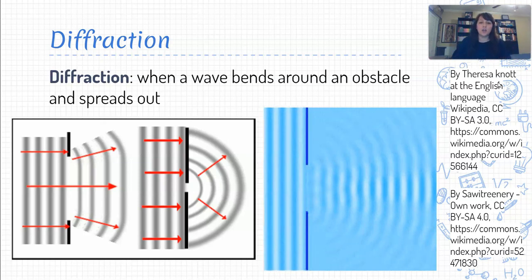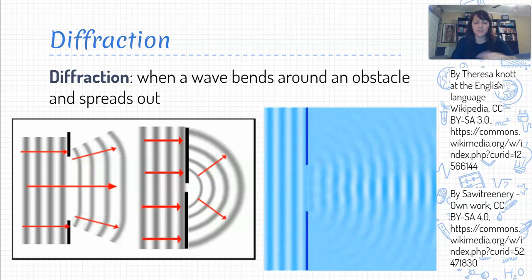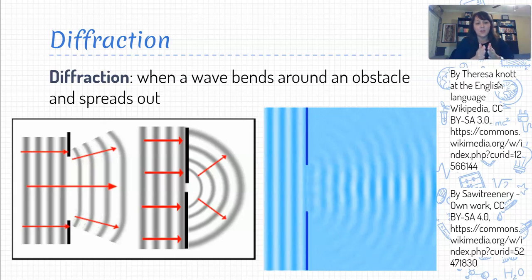Okay, so diffraction occurs when a wave encounters some sort of obstacle and basically bends around it, and as a result, ends up spreading out. And so we can see two different representations of this.